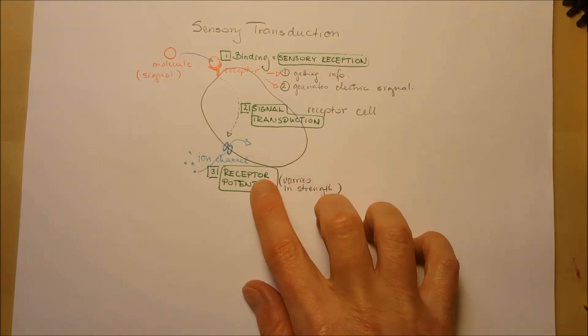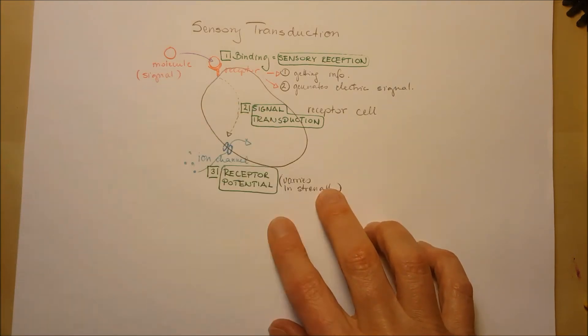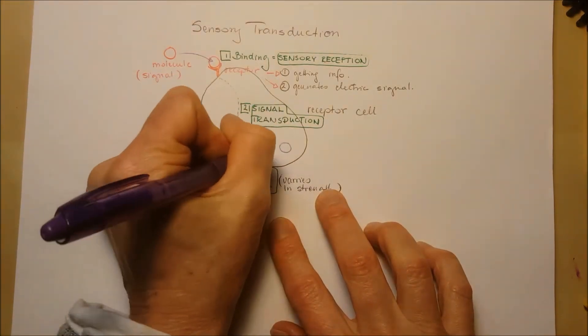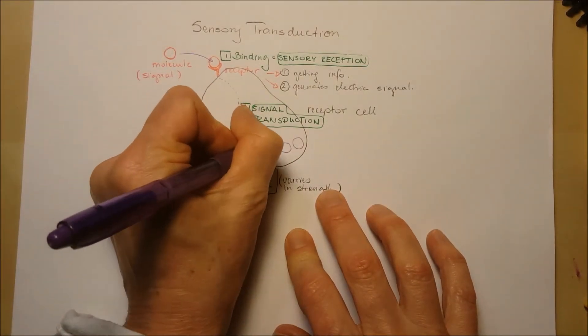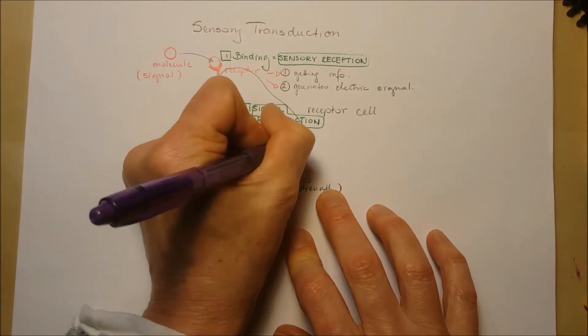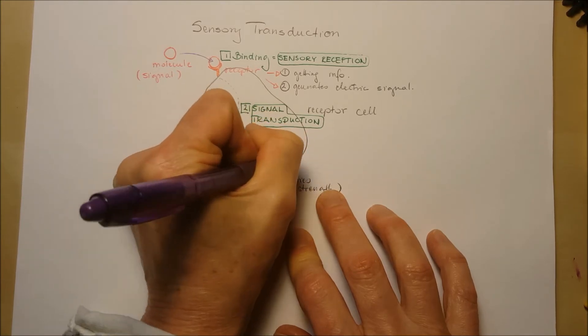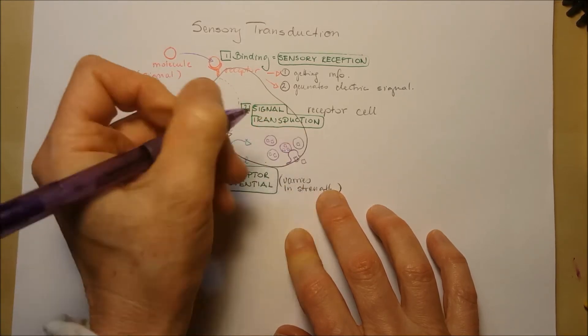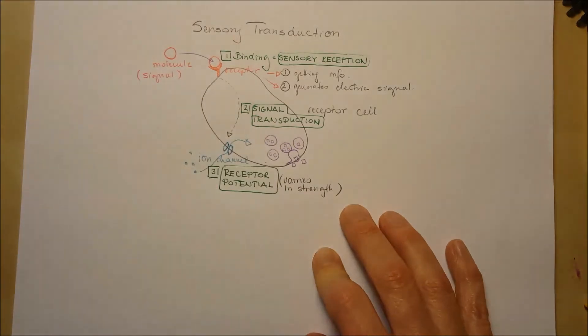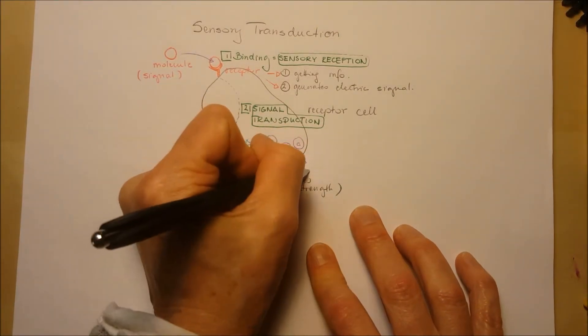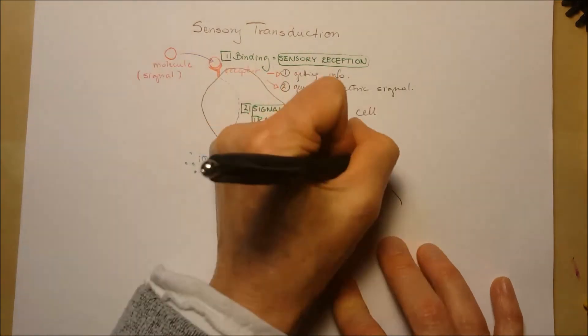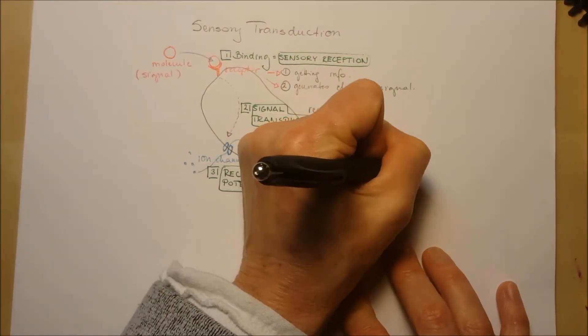So inside of the receptor cell, we have vesicles and in the vesicles, we have molecules that can be called neurotransmitters. These molecules will go through exocytosis and they dump their molecules into the synaptic cleft.